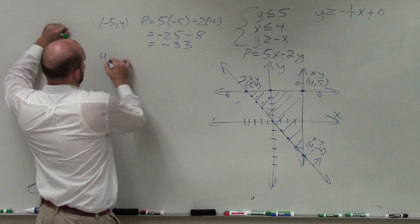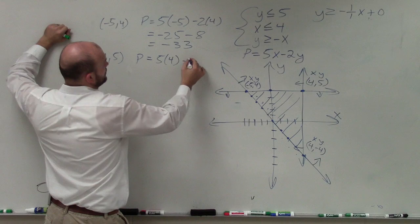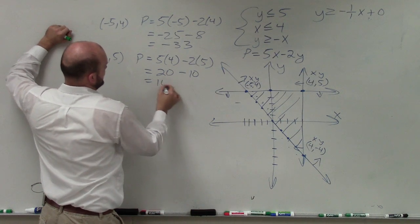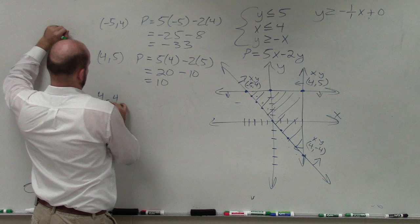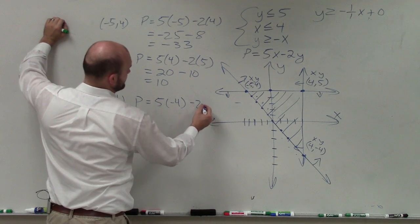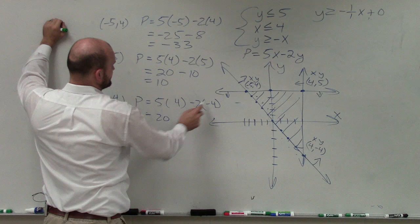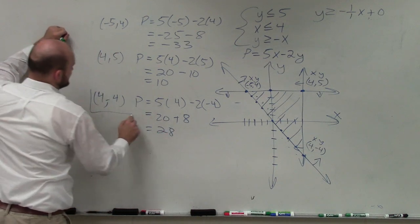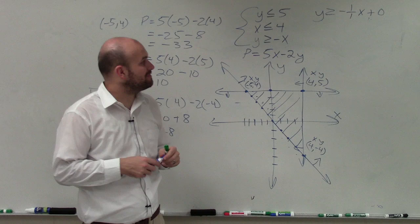Now let's do the next one. The next point is 4 comma 5: p is equal to 5 times 4 minus 2 times 5, which is 20 minus 10, which equals 10. And then the last point is 4 comma negative 4: 5 times 4 is 20, and negative 2 times negative 4 is positive 8, so 20 plus 8 equals 28. Therefore, that's going to give us our maximum value at coordinate point 4 comma negative 4. And there you go, ladies and gentlemen — that is how you optimize your objective function.